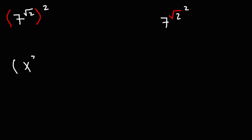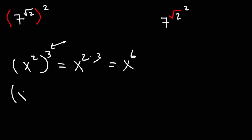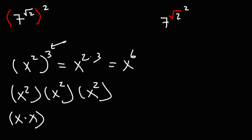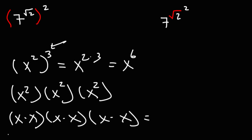What happens when you raise one exponent to another? What's x squared raised to the third power? When you raise one exponent to another, you need to multiply the two exponents. So this is 2 times 3, which is x to the sixth power. Each x squared term is x times x, and with three of them, we have six x variables being multiplied, which is x to the sixth power.